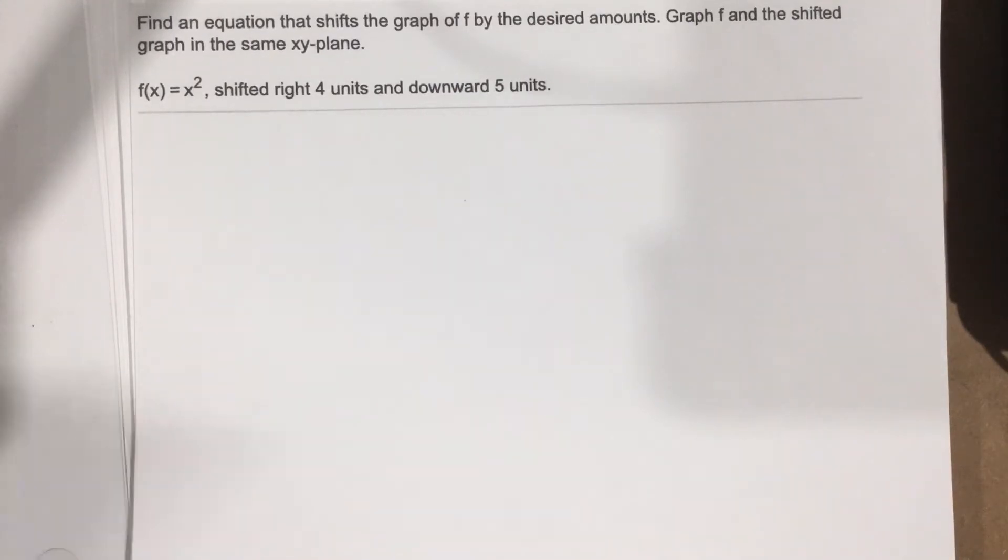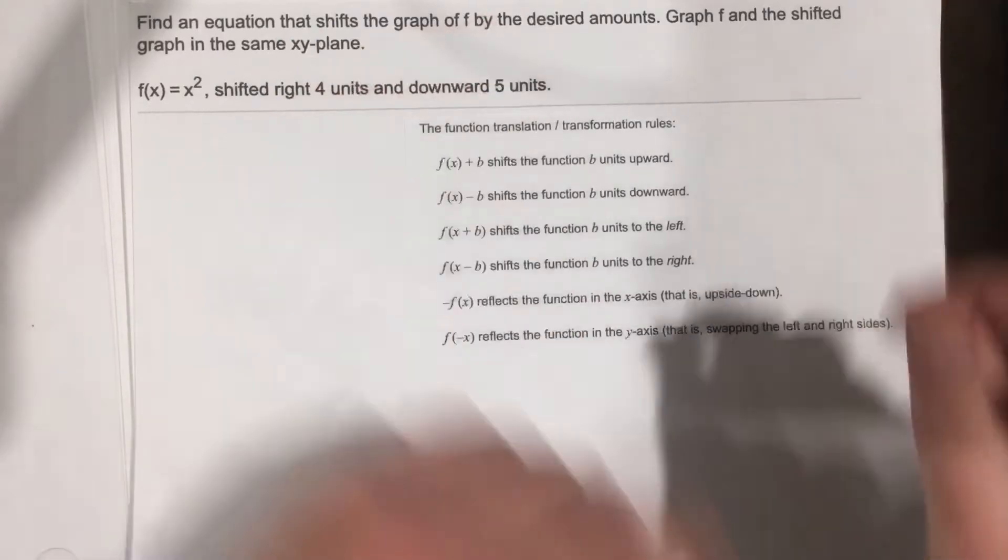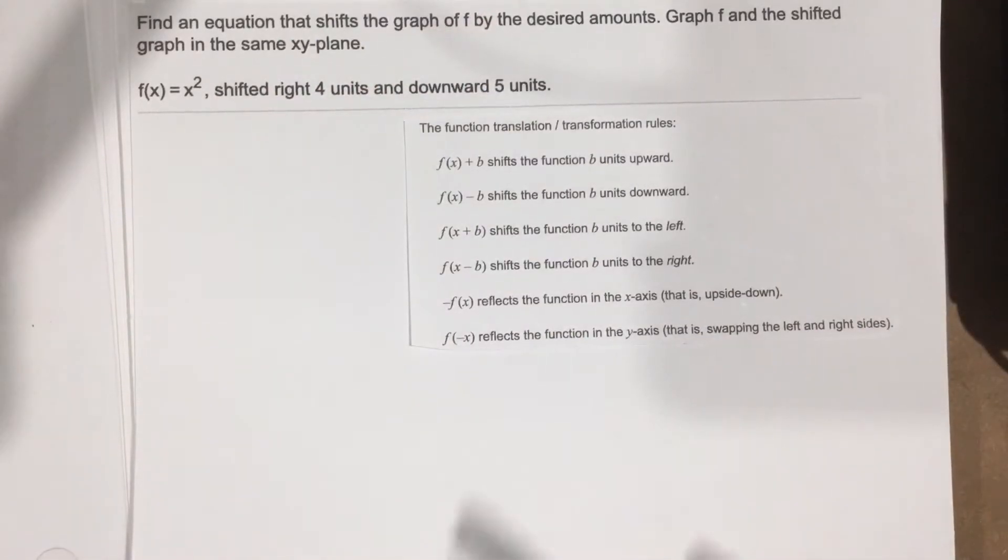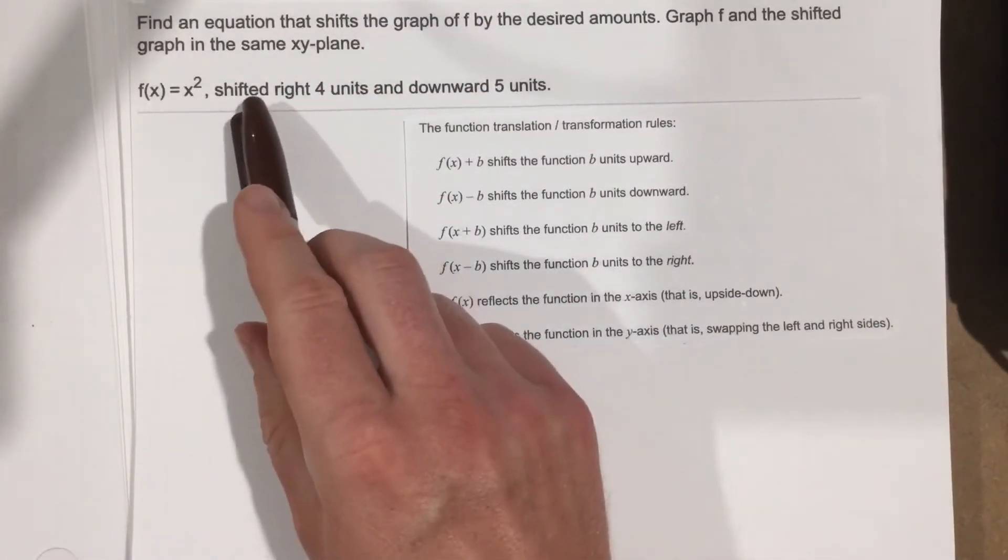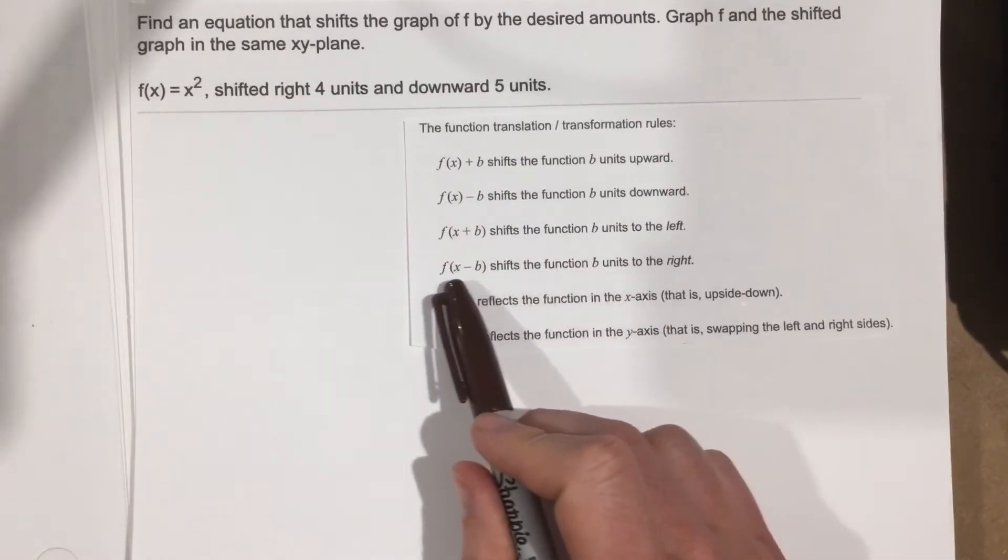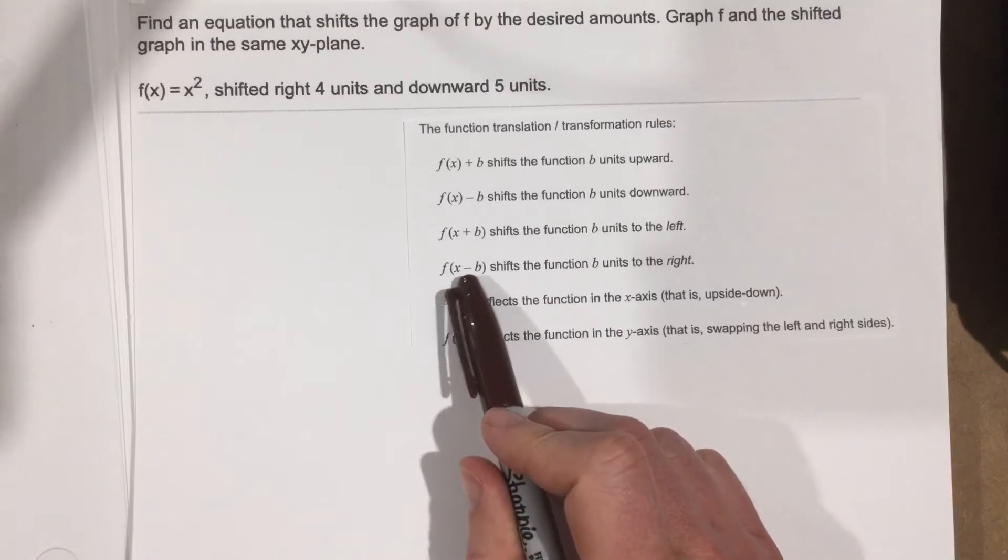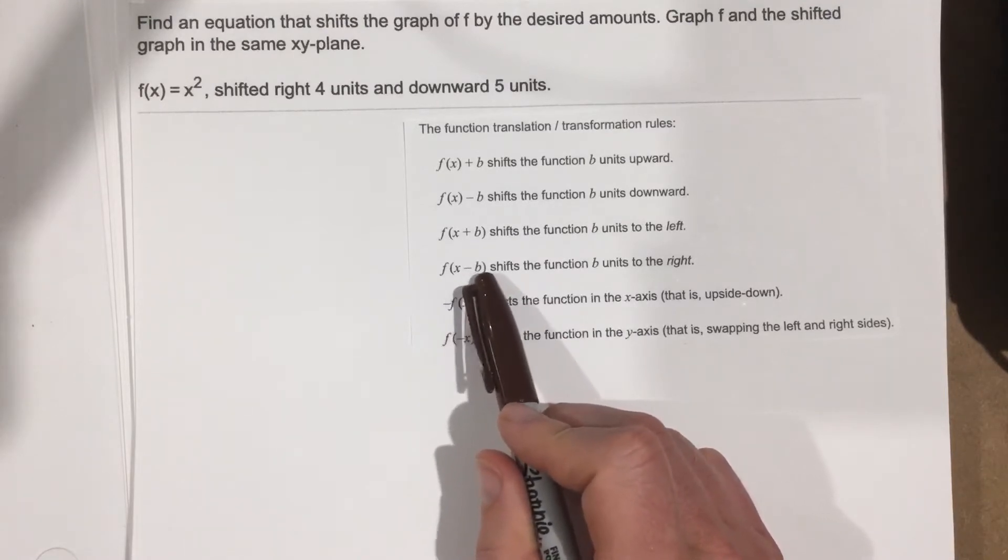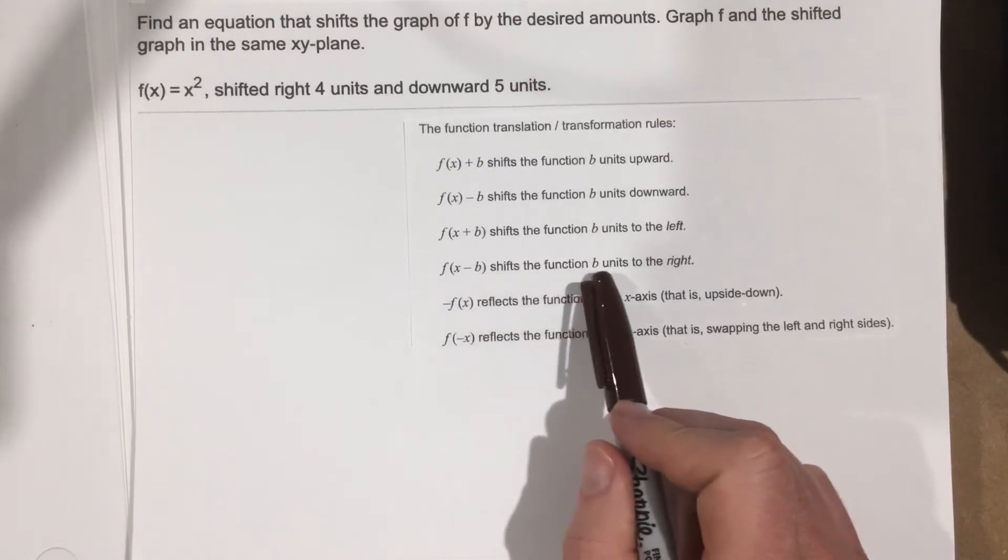You guys are going to have a sheet to kind of keep track of our different shifts. As you can see here, if I want to shift it, it says shifted right 4 units. If I want to shift it right 4 units, it says I need to take x minus b, f of x minus b. Shifts the function b units to the right.